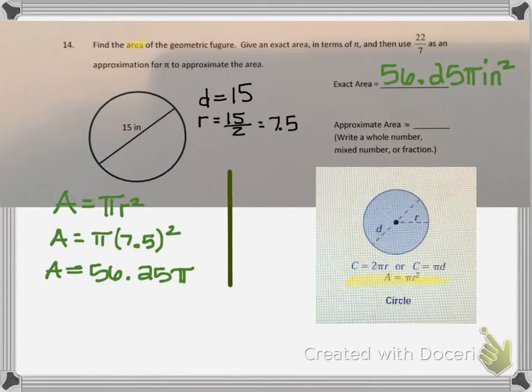So remember, when we find the exact area, we do not use an approximation for pi. Our exact area will have the pi symbol as part of the final answer.